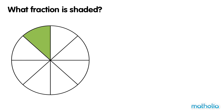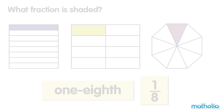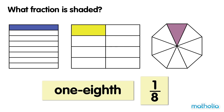This circle is divided into 8 equal parts. One part is shaded. One eighth of the circle is shaded. One eighth. One eighth of these shapes are shaded.